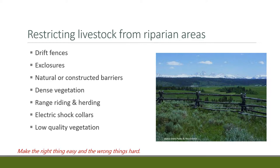Having lower quality vegetation in the riparian area, or not being afraid to have it there, will certainly reduce the attractiveness of that site. The bottom line is to think of everything you can to make the right things easy and the wrong things hard — in this case, the right thing is to stay in the uplands and the wrong thing is to get into the riparian area.